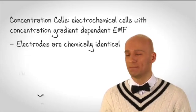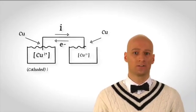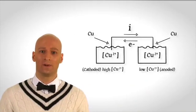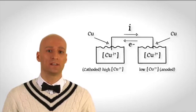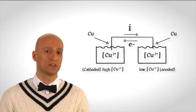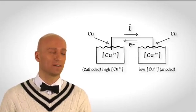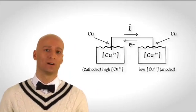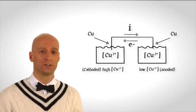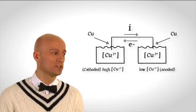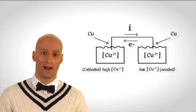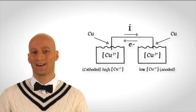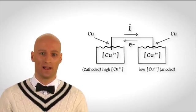We have on the board a model of a concentration cell involving copper ions. On the right side, we have a copper electrode immersed in a low concentration solution of copper ions. On the left side, we have a copper electrode immersed in a solution of copper ions at high concentration. Between the two half cells, we have a concentration gradient of copper ions.